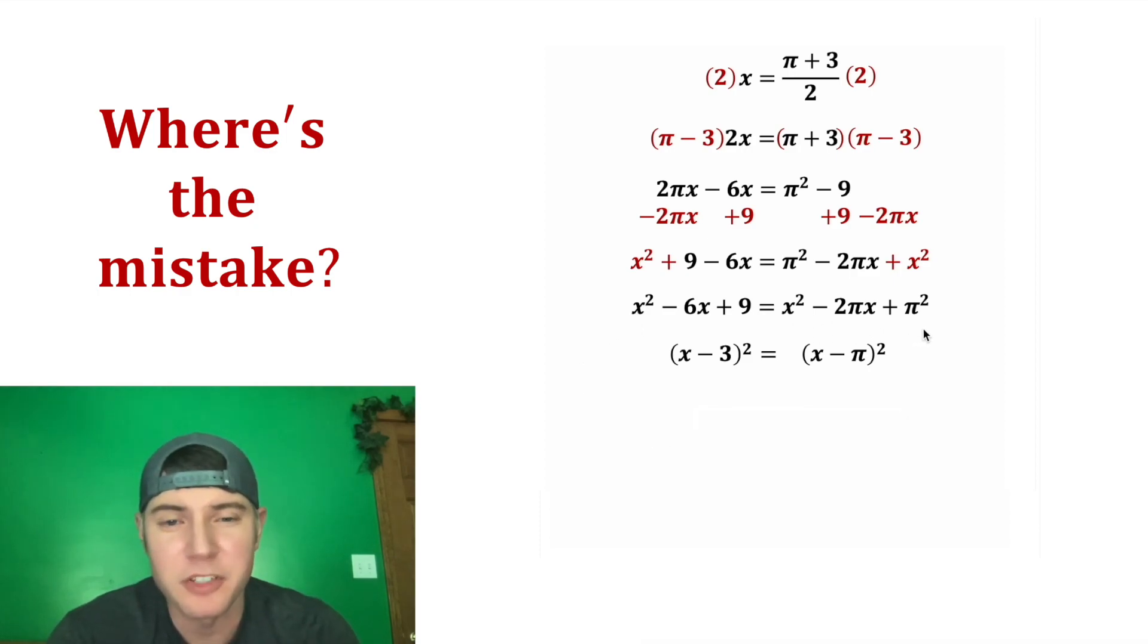And same thing here, this is also a perfect square trinomial. It ends up being x minus pi squared. And if we multiply x minus pi times x minus pi it brings us back to this.